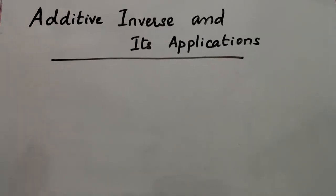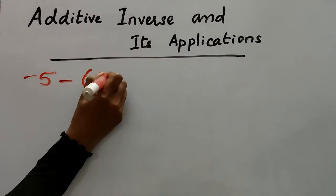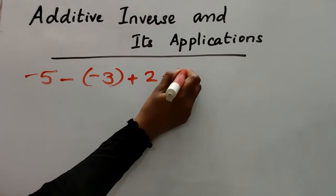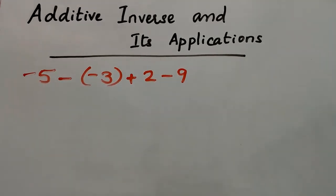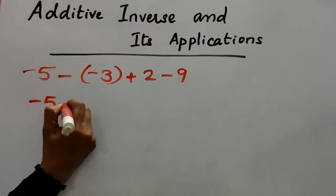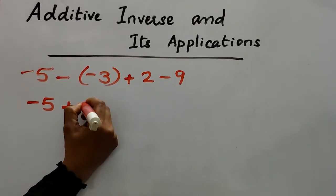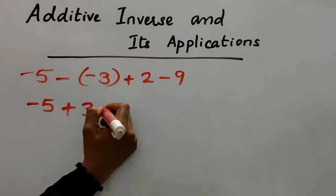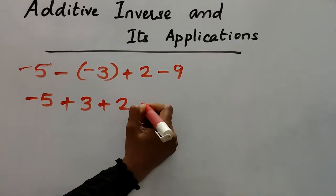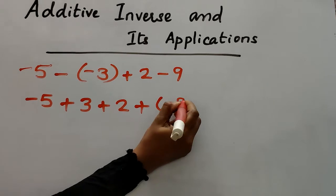Now I'm going to give another question: negative 5 minus negative 3 plus 2 minus 9. First number is negative 5. Subtraction changes to addition; the additive inverse of negative 3 is plus 3. Next is addition, so no need to change. Then subtraction changes to addition; the additive inverse of 9 is negative 9.